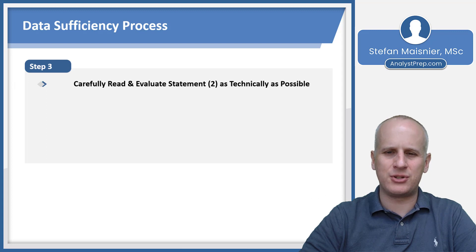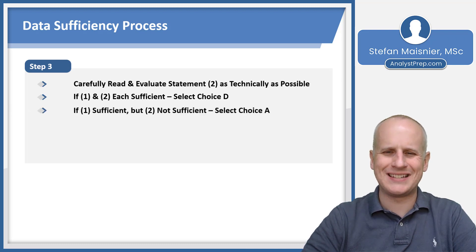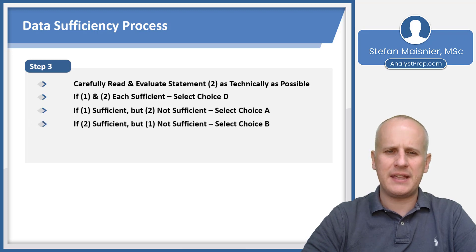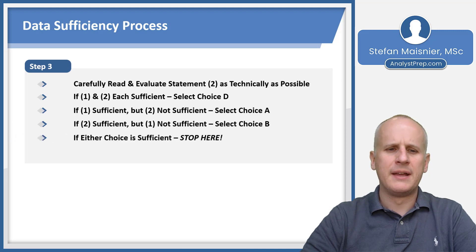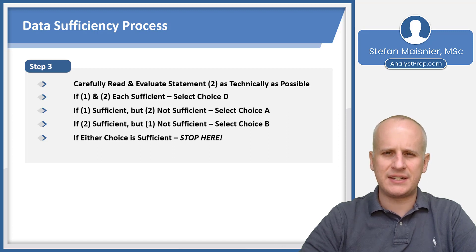Step three is the same for statement two. You will carefully read and evaluate statement two as technically as possible. If one and two each are sufficient, you'll choose choice D. If one is sufficient but two is not, select choice A. If two is sufficient but one is not, select choice B. If either choice alone is sufficient, you must stop here. Be careful of turning an alone sufficiency into an incorrect choice C — the answer is C only if the conditions are not sufficient alone.